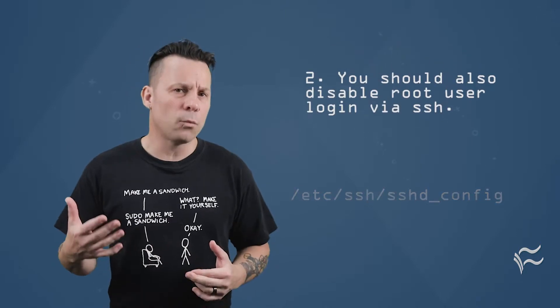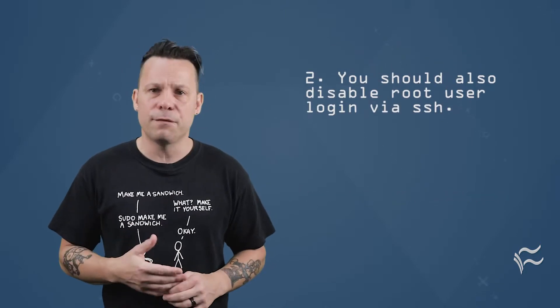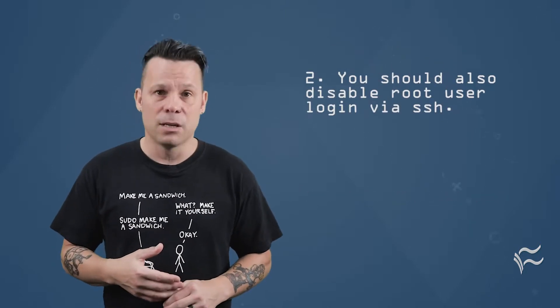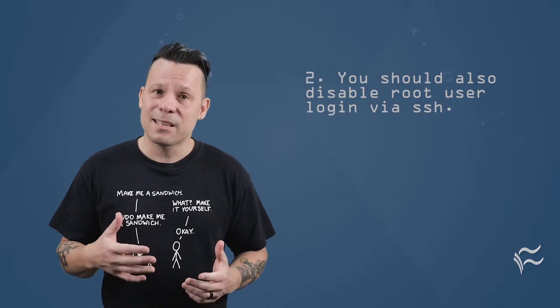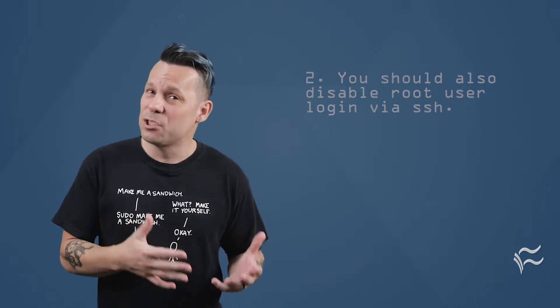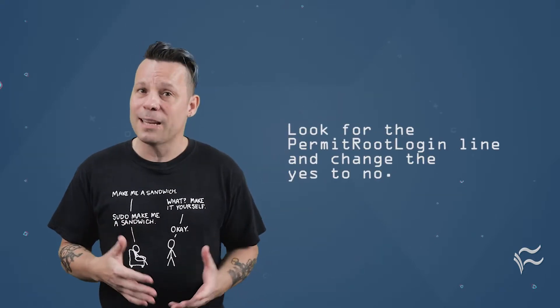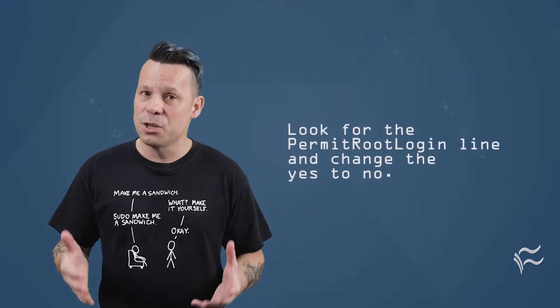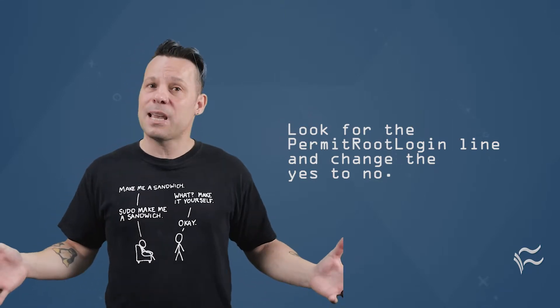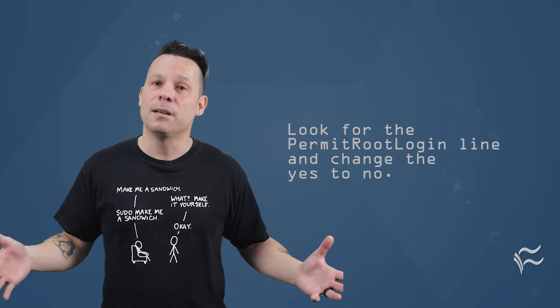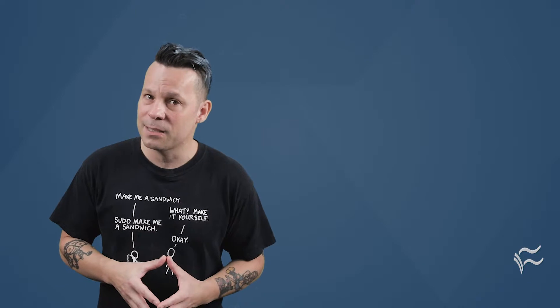You should also disable root user login via SSH. To do this, open up the /etc/ssh/sshd_config file, look for the PermitRootLogin line and change the yes to no. Save the file and restart the SSH daemon. The root user can no longer login via SSH.